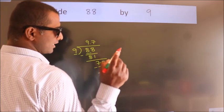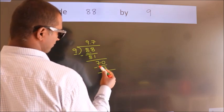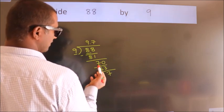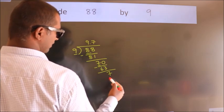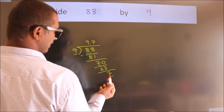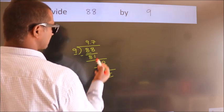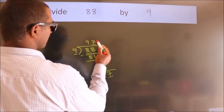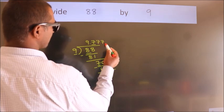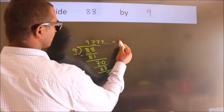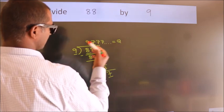Now you observe, we had 7 here and we got 7 again. That means this number keeps on repeating. So this is our quotient. And now you see this one, it is 1 again.